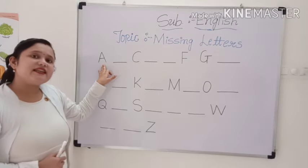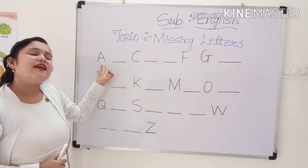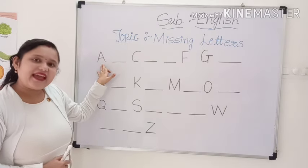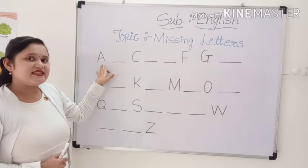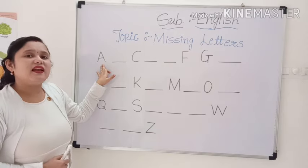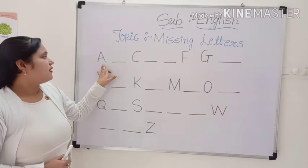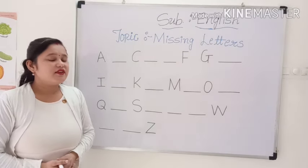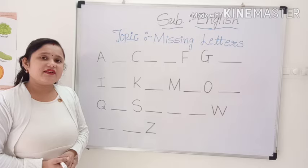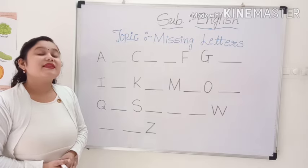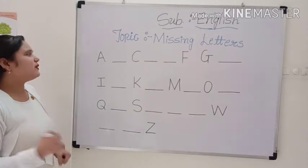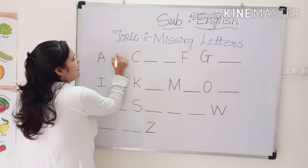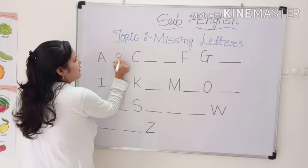Do you know which letter is this? Yes, this is capital letter A. Which letter is this? Capital letter A. And what comes after A? Which letter comes after A? B. Very good. B. Capital B.